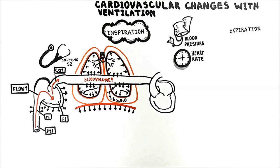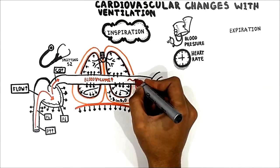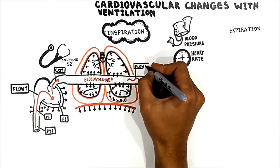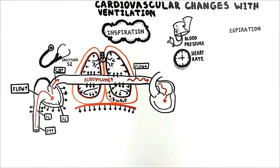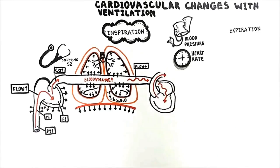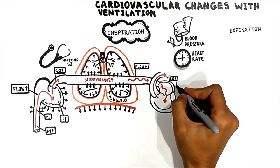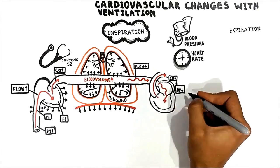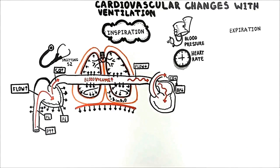In addition, this increases the pulmonary vascular resistance. Because of this, the flow to the left heart decreases. As a consequence, this leads to decreasing left ventricular output, which in turn decreases the blood pressure — mainly systolic pressure.